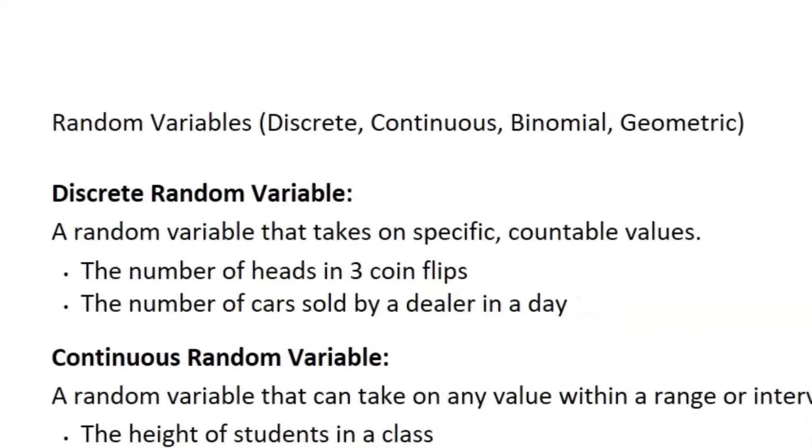So let's move on to the random variables. So we have four types: discrete, continuous, binomial, and geometric. So your discrete random variable is a random variable that takes on specific countable values. So think of like number of heads that you flip in three, the number of cars sold by a dealer in a day. So it's like quantitative numbers.